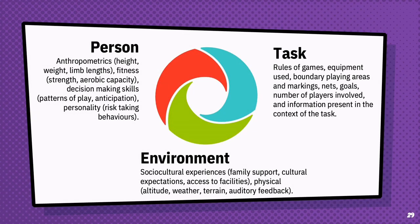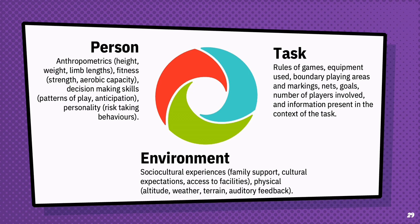Personal characteristics include height, weight, and limb lengths, fitness, decision-making skills like patterns of play and anticipation, and personality factors like risk-taking behaviours. Task constraints can include the rules of the game, equipment used, boundary playing areas and markers, nets or goals, the number of players involved, and information present in the context of the task — like how many wickets we've taken or how many runs the batter is on. Environmental constraints can be sociocultural experiences like family support, cultural expectations, and access to facilities, as well as the physical environment — altitude, weather, terrain, and auditory feedback either from the coach or from a crowd.